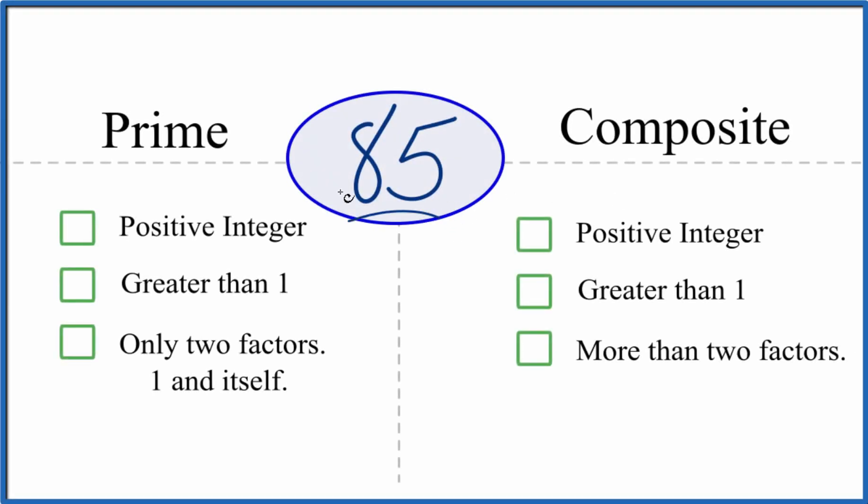Here's how you can tell whether 85 is a prime or composite number. Let's look and see whether it's a prime number first. It's a positive integer, 85, that's a positive integer. Is it greater than 1? Yep, it's greater than 1.